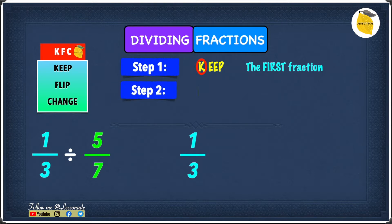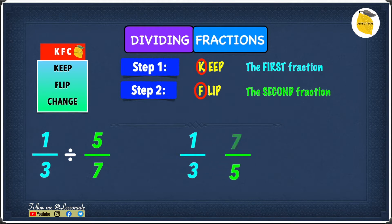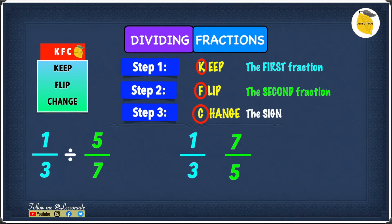Step two is F, and F stands for Flip — flip the second fraction. The second fraction is 5 over 7, and we flip it to 7 over 5. Then step three is C, and C stands for Change — change the sign. The sign we have right now is division, so we change it into multiplication.